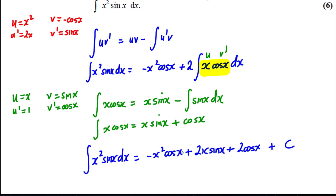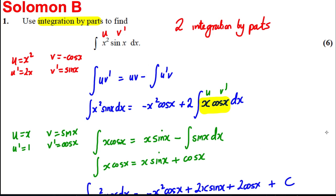So here's our final answer: negative x squared cos x plus 2x sine x plus 2 cos x plus c. And we're done, for six marks.